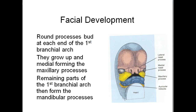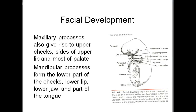At each end of the first branchial arch, round buds develop. They grow up and medially, forming the maxillary processes. The remaining parts of the first branchial arch then form the mandibular process. The maxillary processes also give rise to the upper cheeks, the sides of the upper lip, and most of the posterior portion of the palate.